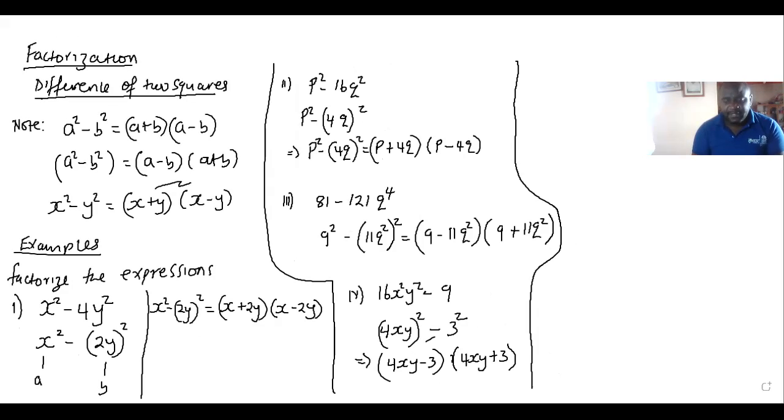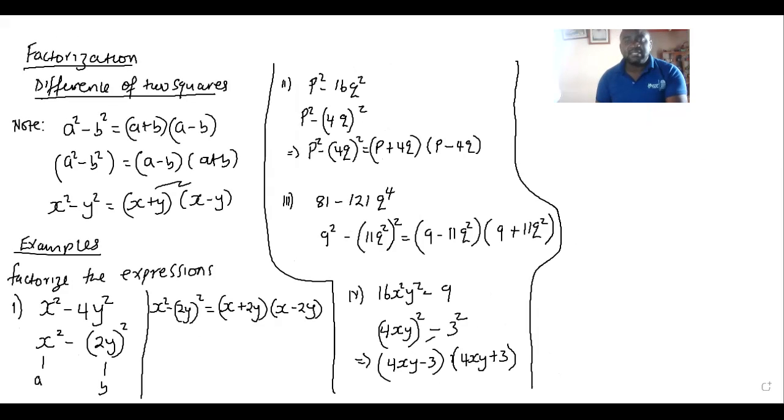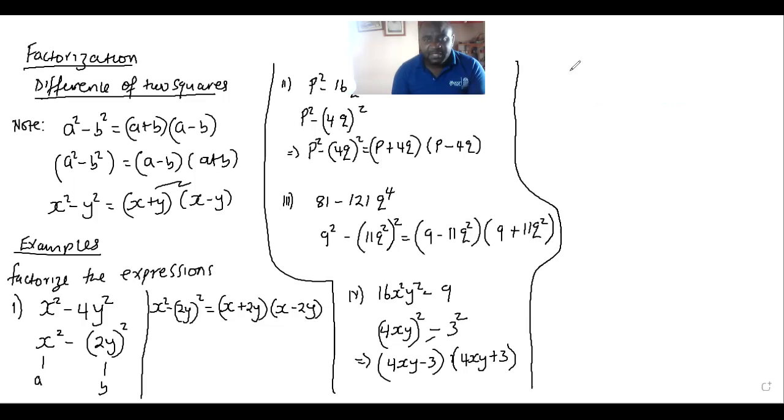So lastly, we can have an illustration on this. The last example I can give on this can be, if we have, for example, a term like, let me call this example 5. We have 3 minus 3f squared.